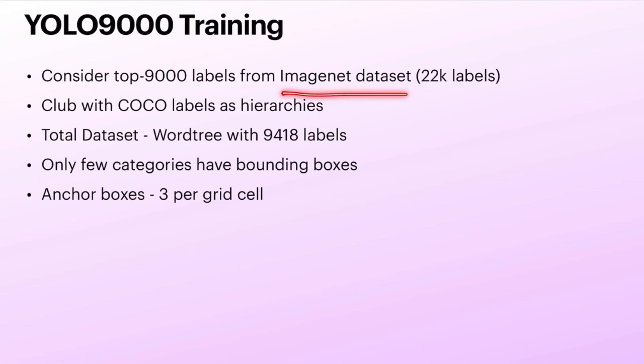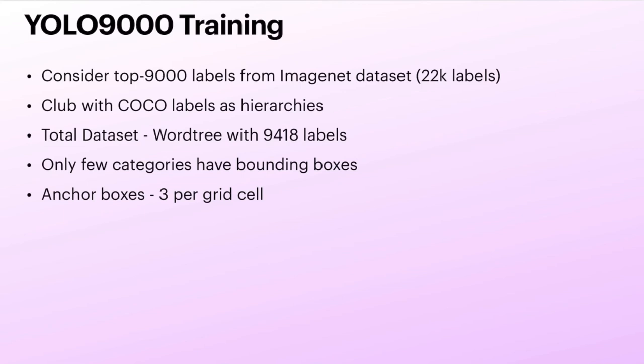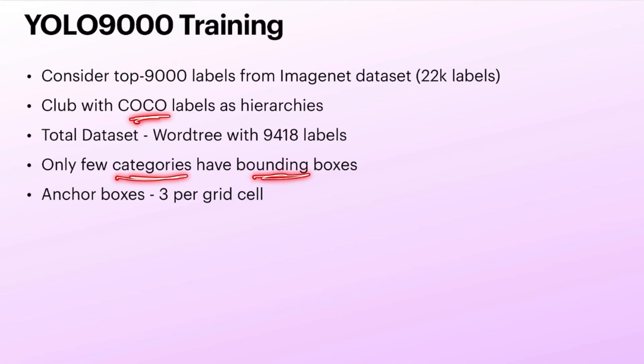Then they took the top 9000 labels from the ImageNet dataset and clubbed them with the COCO dataset to get the final WordTree dataset with 9400 labels — that is why the name YOLO 9000. Now for the actual object detection, they combined COCO labels with bounding boxes and the top 9000 ImageNet labels with only classification scores into the total combined WordTree dataset. Only a few categories will have bounding boxes because COCO has only 80 categories with bounding boxes.